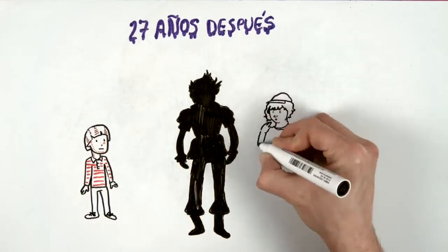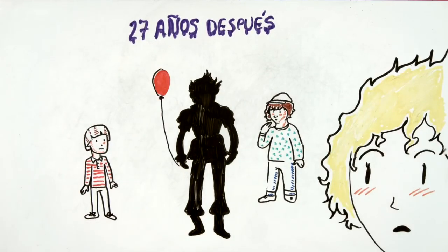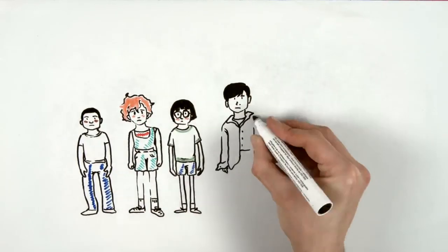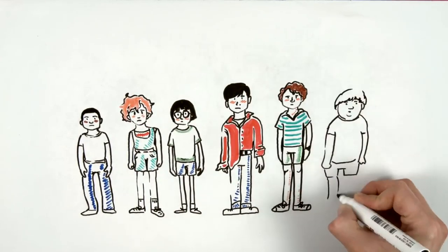27 years after the events in Maine, Pennywise comes back and so do his attacks on children. Where are the members of the Losers Club? What are they like now that they're all adults? Do they remember Pennywise?